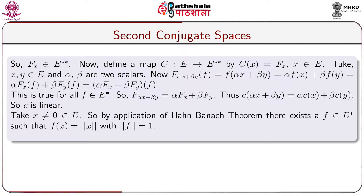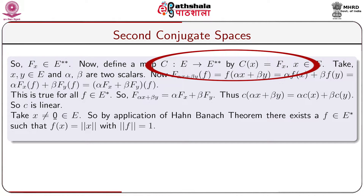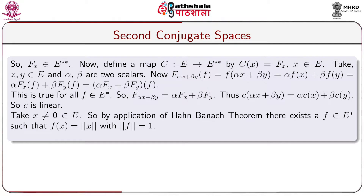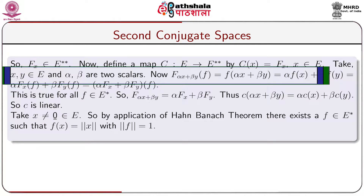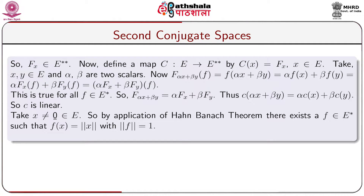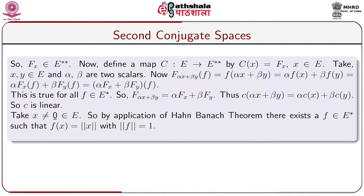So F_x belongs to E**. Now define a map C from E to E** by C(x)(f) = F_x(f), where x belongs to E. Take x, y belonging to E and α, β any two scalars. Now C(αx + βy)(f) equals by definition f(αx + βy). Since f is linear, f(αx + βy) = αf(x) + βf(y) = α F_x(f) + β F_y(f).